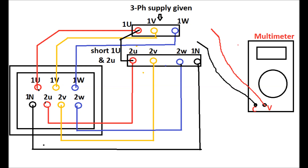Here, 1U, 1V, and 1W are connected using color-coded wire and three-phase supply has been given to terminals 1U, 1V, and 1W. Similarly, the secondary winding and neutral are taken by color-coded wire, and 1U and 2U are shorted at the shorting terminal. We then use a multimeter where C is the common point and V is the volt point to measure different voltages.